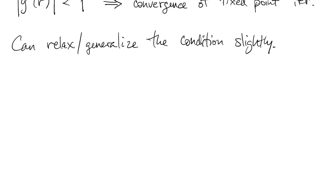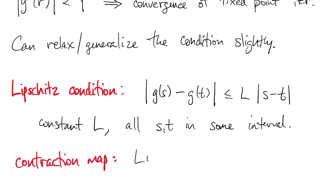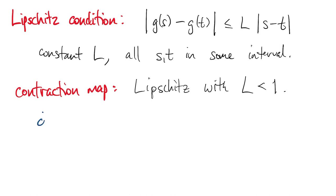In math, in analysis, we call it a Lipschitz condition. We say a function satisfies a Lipschitz condition if the absolute value of g of s minus g of t is less than or equal to a constant L times the absolute value of s minus t for all values of s and t in some interval or set. And then a contraction map would be the special case of a Lipschitz condition with constant less than 1. We call it a contraction map because after you apply g to all the points in the interval, all the distances between points have gotten smaller. So distances are contracting.